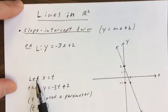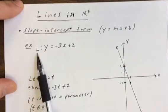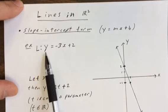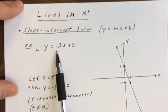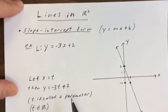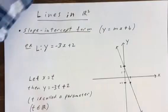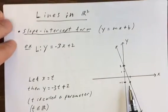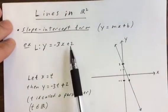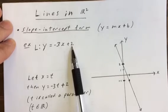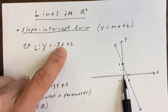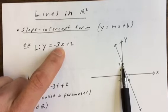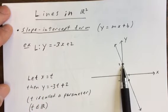Let's start with an example. Let line L be y equals negative 3x plus 2. If we had to graph this, we look at the equation and note that when x equals 0, y equals 2. So our starting point — the y-intercept — is at (0, 2).